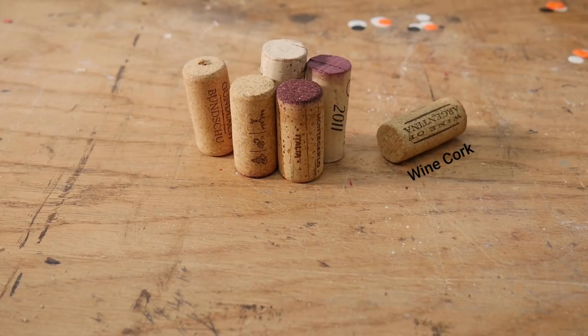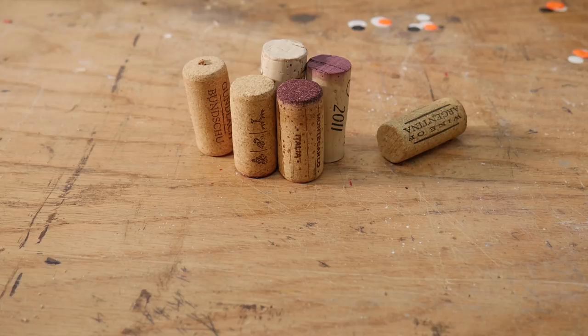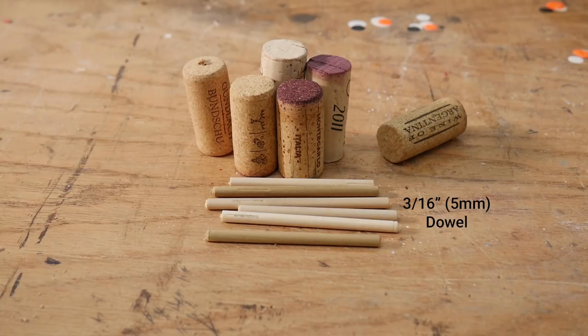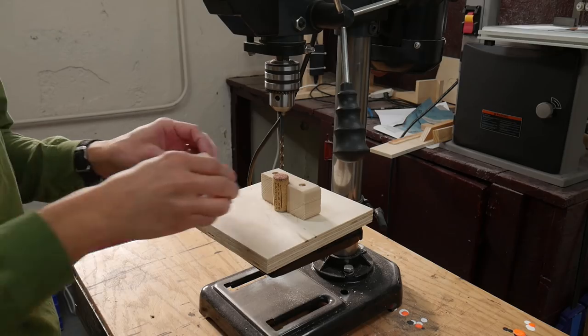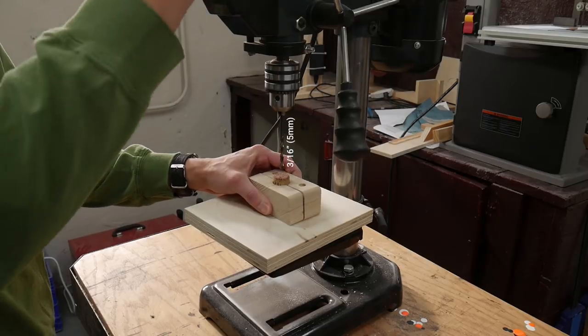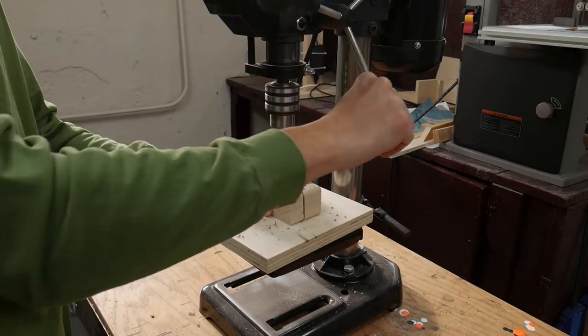I got a few wine corks compliments of my dad. I really only needed two but I wanted extras in case I messed up. And I also got some short pieces of 3/16 inch dowel. I drilled 3/16 inch holes in the center of the wine corks that went about halfway through.